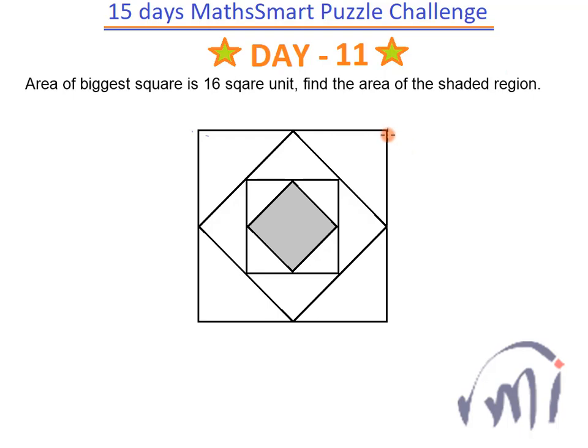Hi, so this is the first problem of day 11 of our 15 days of math smart puzzle challenge. Here we have a series of squares — one bigger square, and inside it from these points we have another square, then another, then another. We have to find the area of this fourth square from outside which is shaded. We are going to solve this problem in two ways: one by calculation, and another without any calculation.